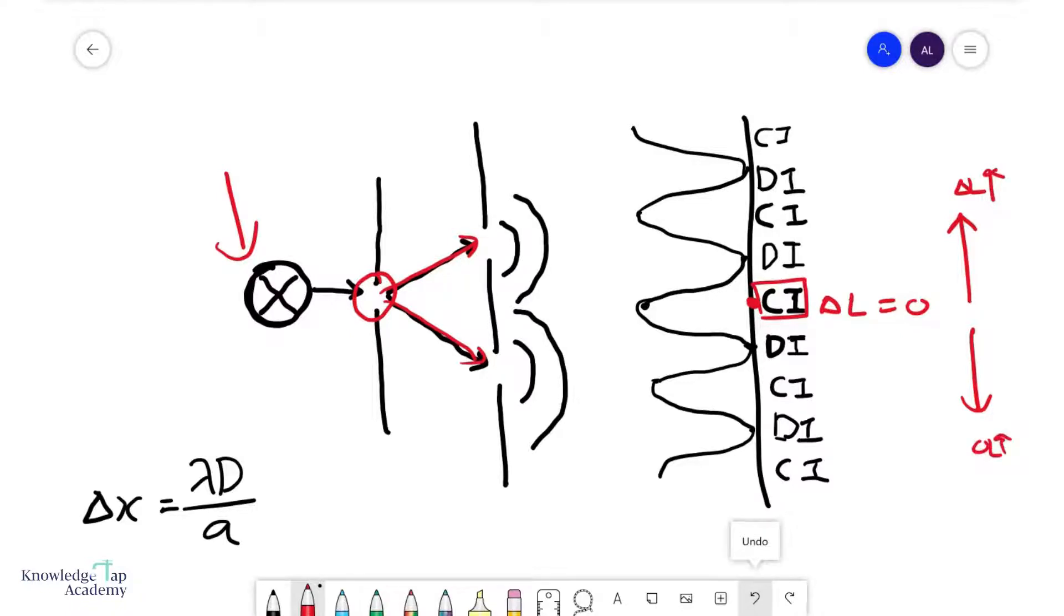And so you'll reach some point where your path difference will be exactly equal to half of wavelength. And this will be symmetrical on both sides. And so this creates your destructive interferences, and also what we call the first order minimum.